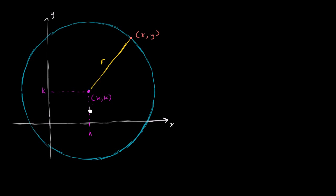So what's the relationship going to be between x, y, h, k, and r? I could have put this point x, y anywhere on the circle — I could have done it here as well. This would also be r away from the center.